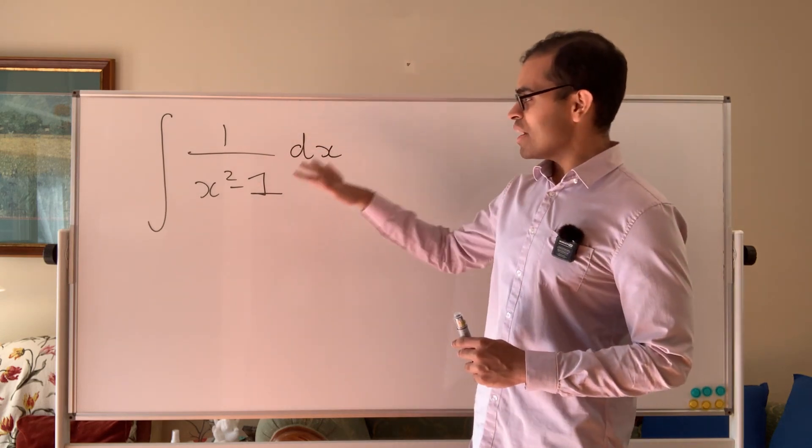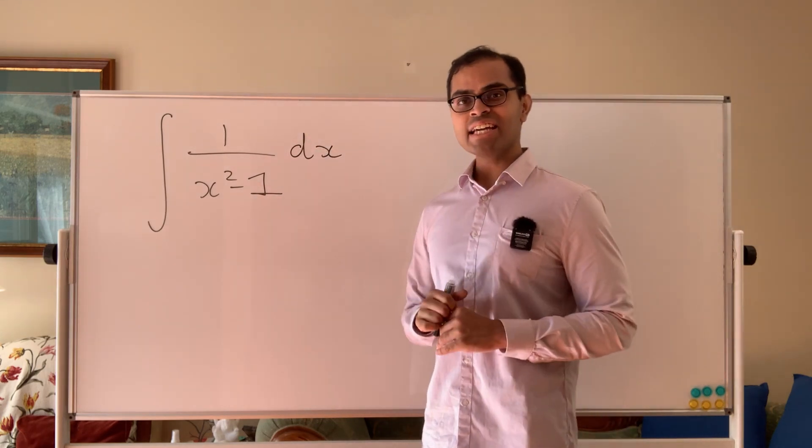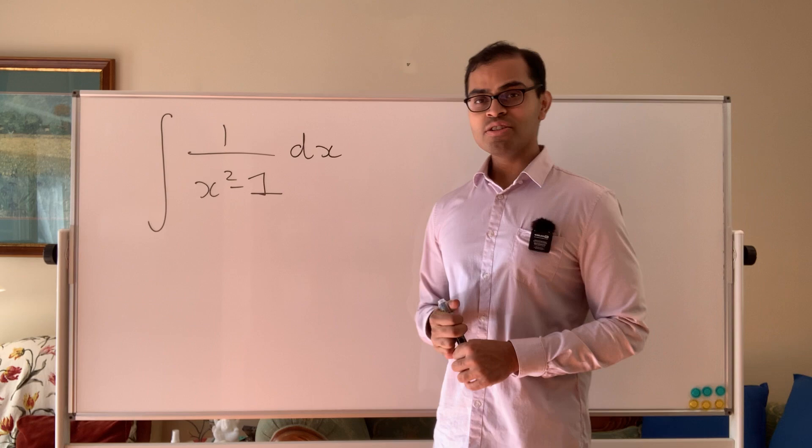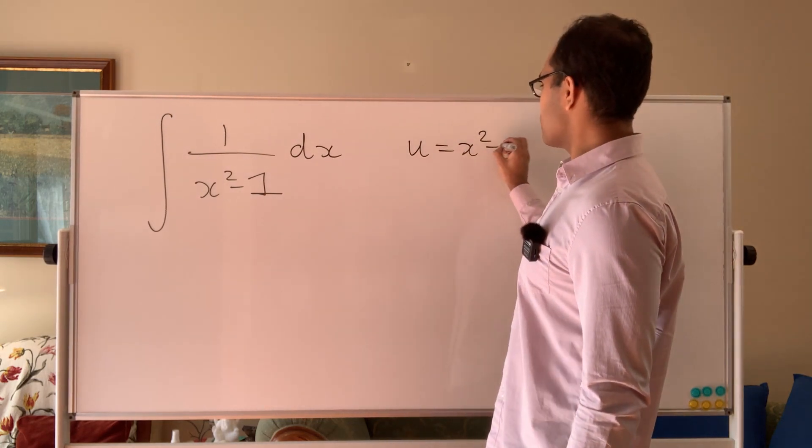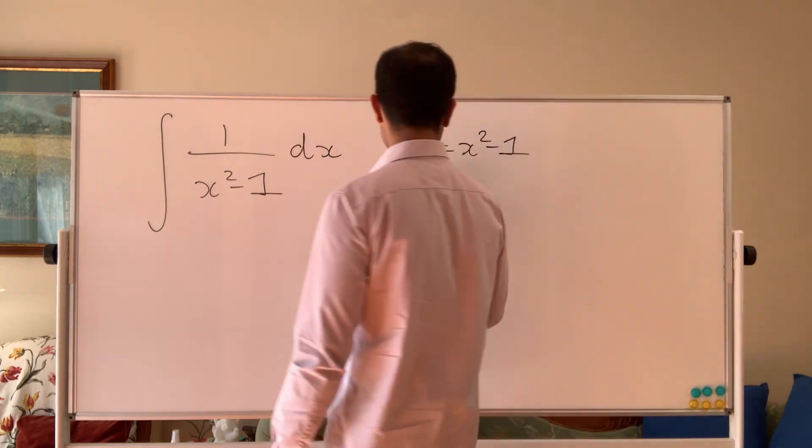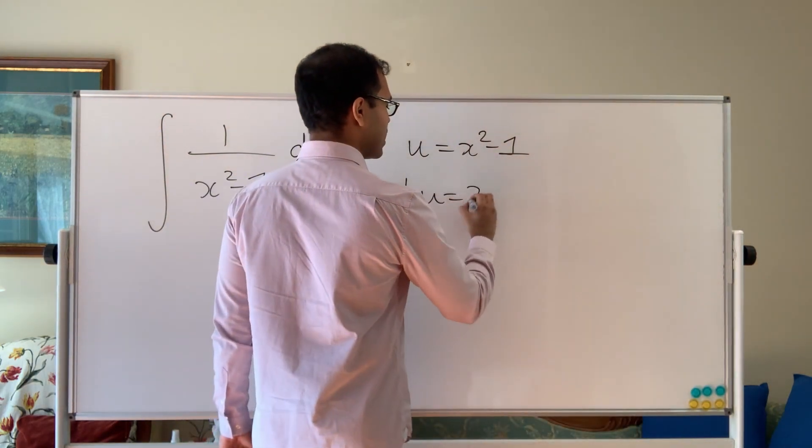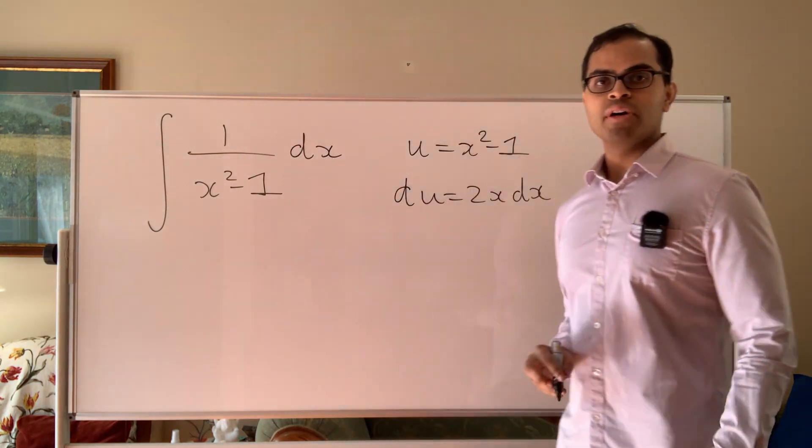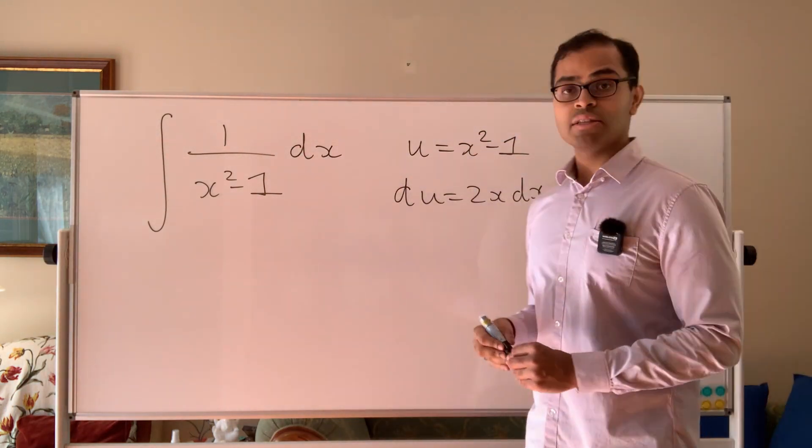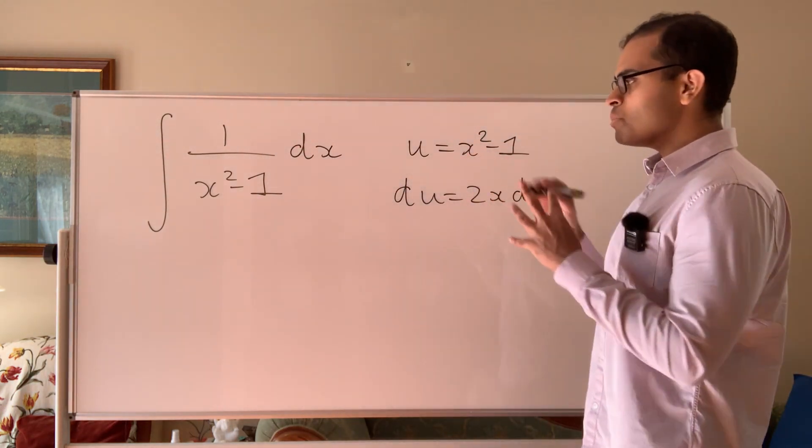Now here we have a function 1 over x squared minus 1, which you want to find the antiderivative of, and the obvious thing to do is to try to do a u substitution. Well the u we have to play with is u equals x squared minus 1, but then if you try to do that, you get du equals 2x dx, and there isn't really a 2x dx up the top. So if there were, then we could finish the problem this way.